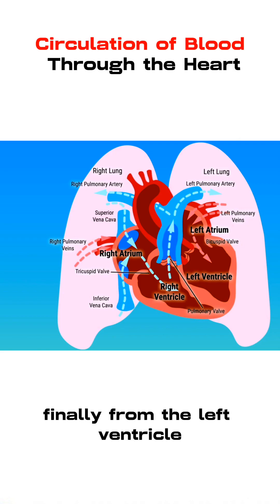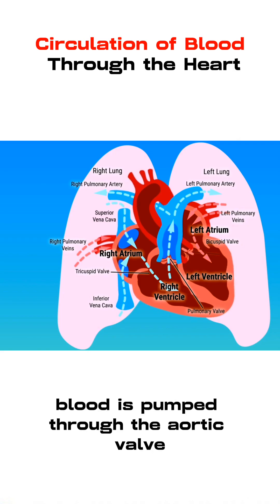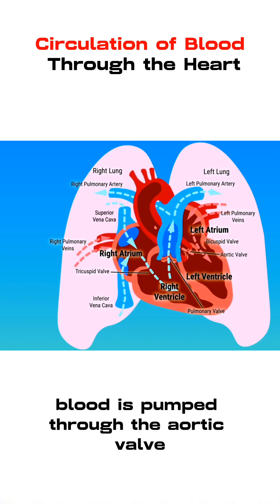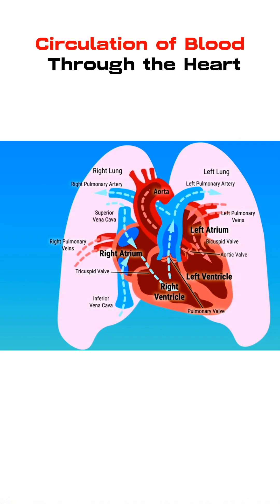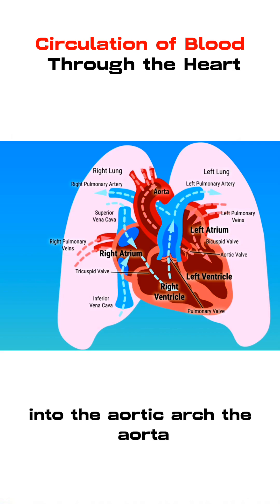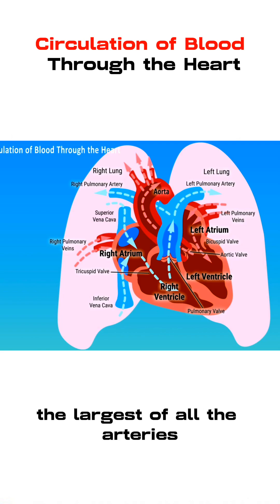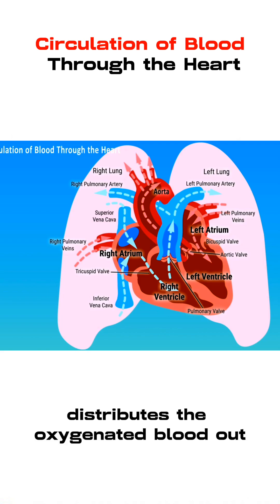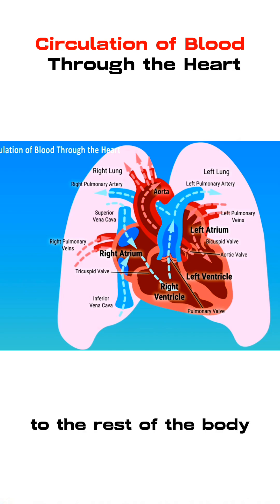Finally, from the left ventricle, blood is pumped through the aortic valve into the aortic arch, the largest of all the arteries, which distributes the oxygenated blood out to the rest of the body.